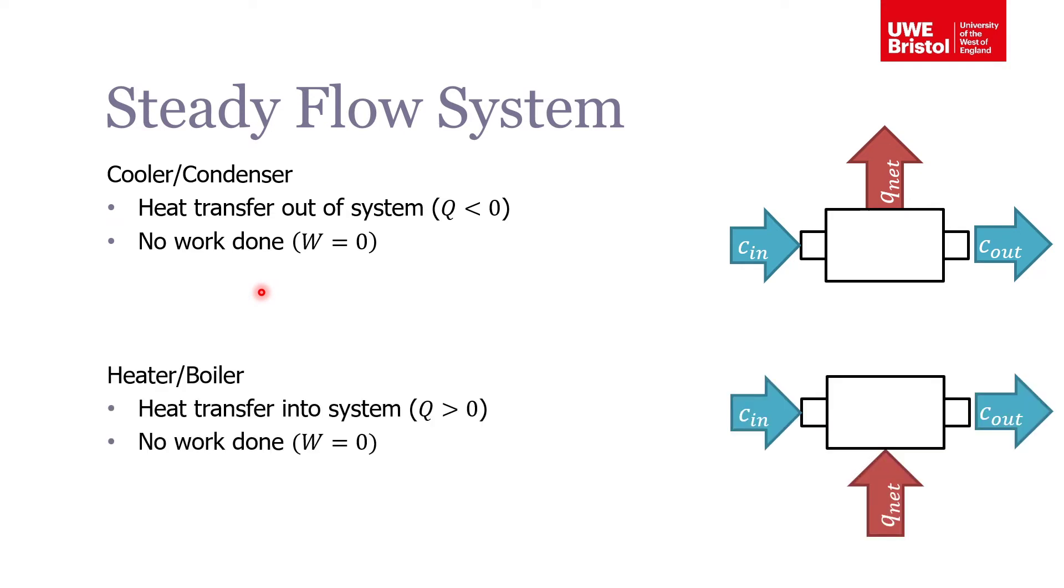The opposite of that is a heater or boiler. Here we're putting fluid in, and what goes in must come out, so the mass flow rate is constant. There's a net transfer of heat into the system, so Q is greater than zero. Heat added to a fluid is considered positive; heat removed from a fluid is negative. And again, because this is rigid, there's no work done, so W is zero.